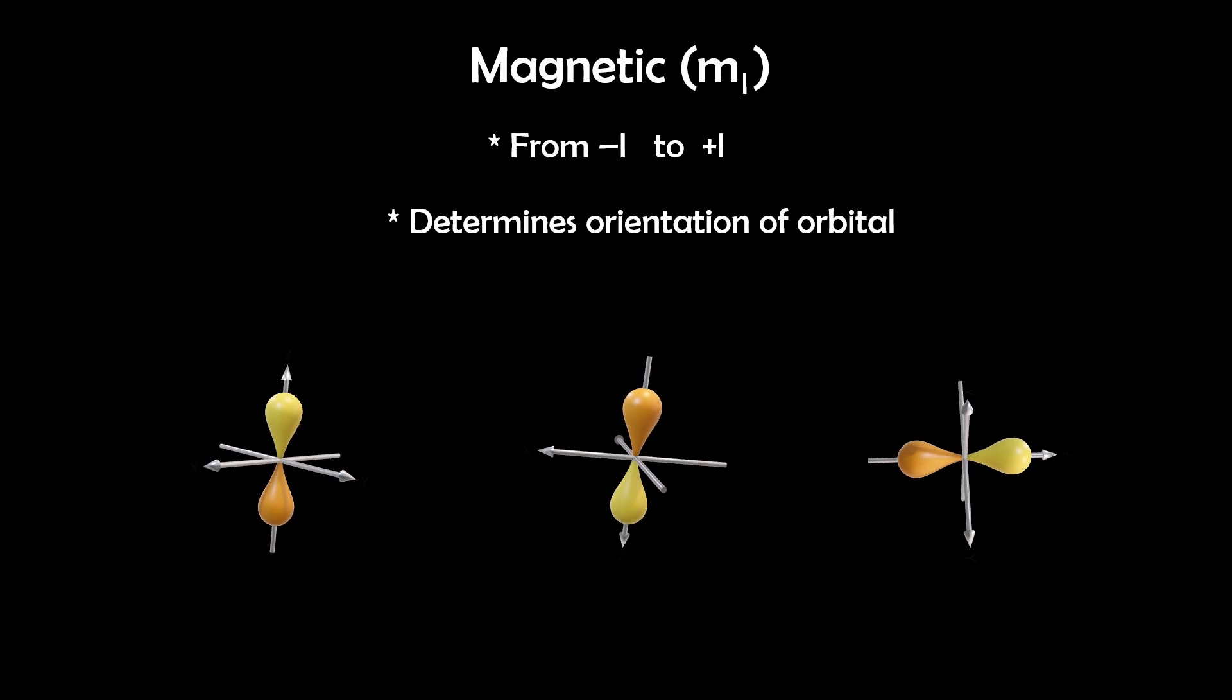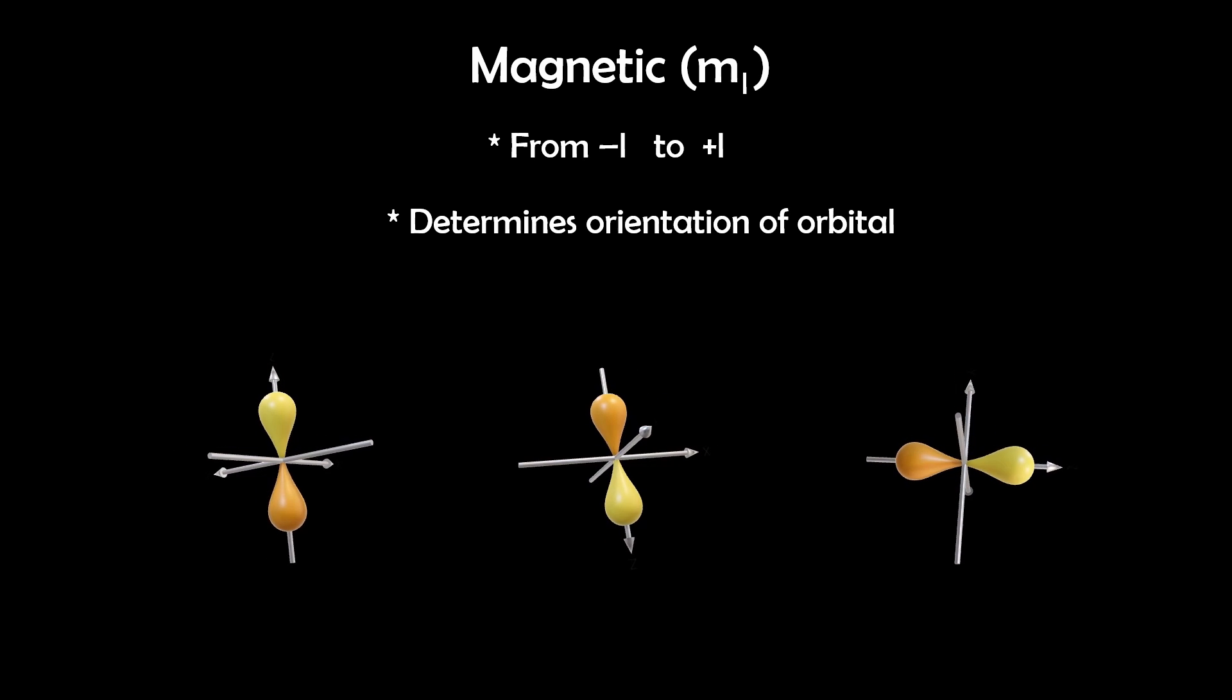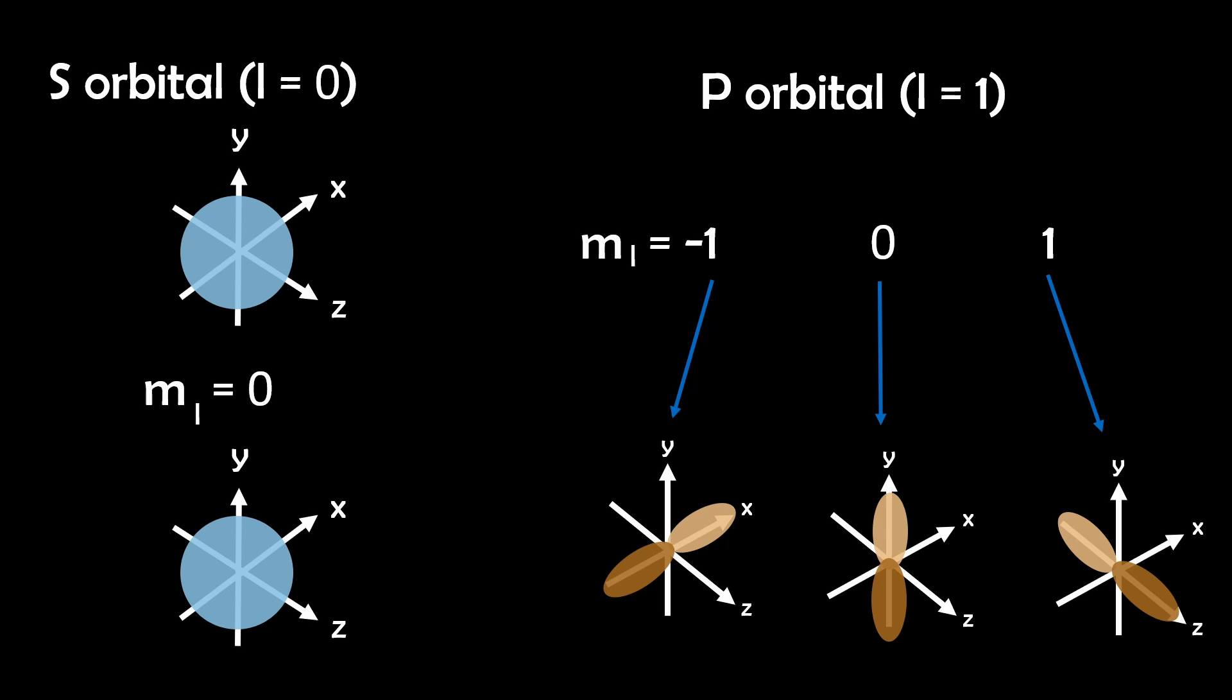The magnetic quantum number M sub L, which can be any integer between negative L or positive L, specifies the orbital's orientation. This number relates to the possible configurations of each orbital shape. For example, S orbitals where L equals zero only have one configuration, so M sub L equals zero. Whereas P orbitals where L equals one have three configurations where M sub L can equal negative one, zero, or one, and so forth.